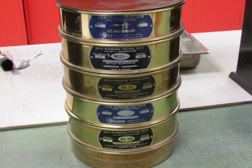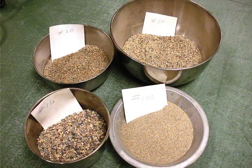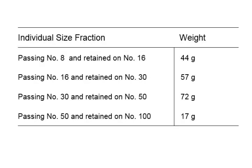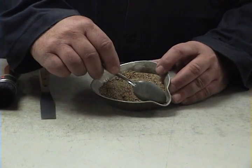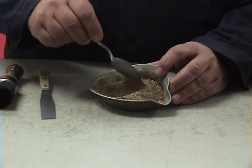Shake the sample using the appropriate sieves. To run the FAA test, you need a final composite sample size of 190 grams. This sample is created by combining prescribed amounts of material from the number 16, 30, 50, and 100 sieves. The amounts needed are shown in this table. After obtaining the individual portions, combine the fractions and thoroughly mix, making sure there is no segregation in the sample.